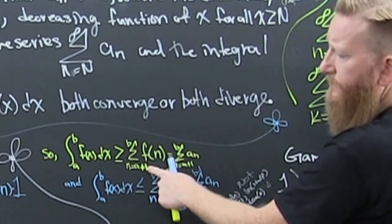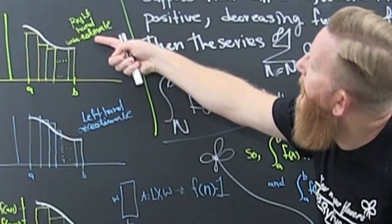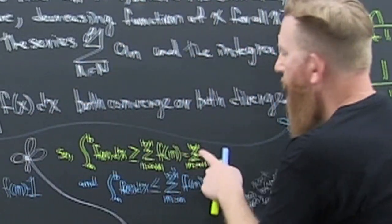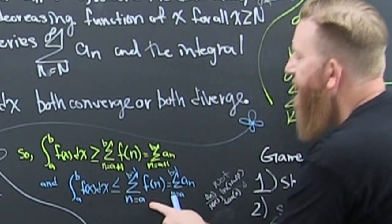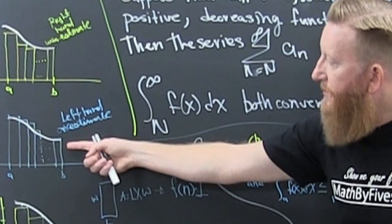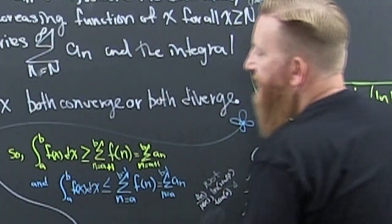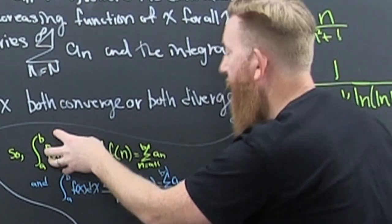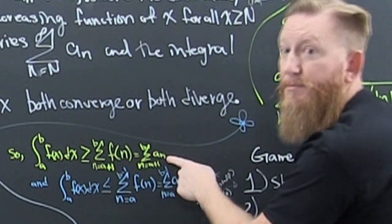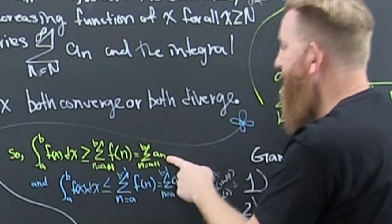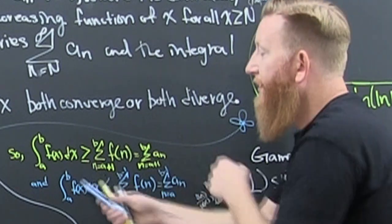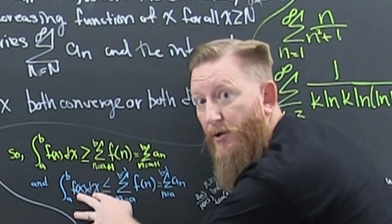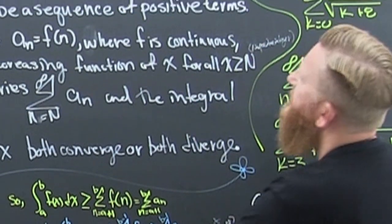The integral is the overestimate relative to the series shifted by one. So if the integral converges, that area is an actual finite number, and since the series is smaller than that number, the series also converges — it will be an actual number, just a little bit smaller.